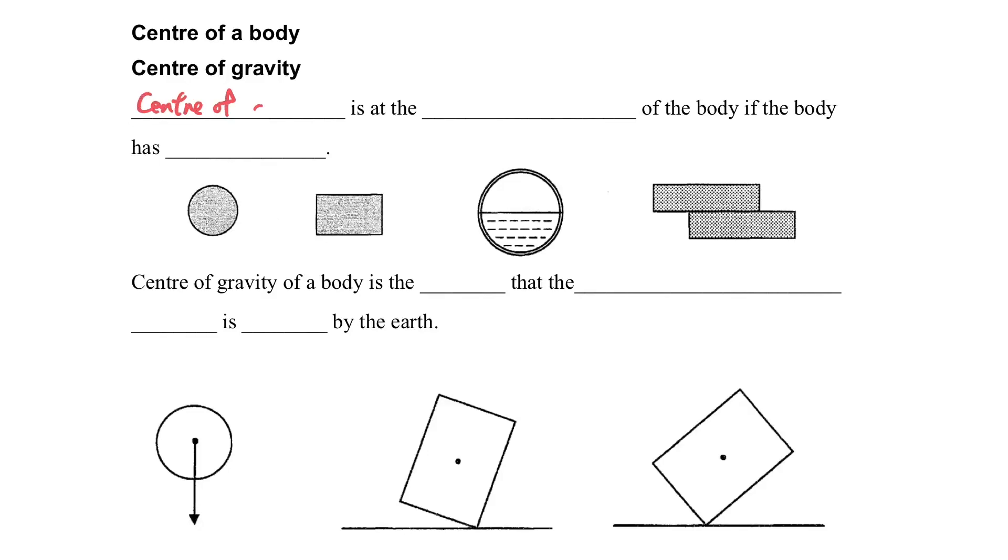Center of gravity. The center of gravity is at the geometric center of a body if the body has uniform mass. That means usually the center of gravity is located at the center of the object.